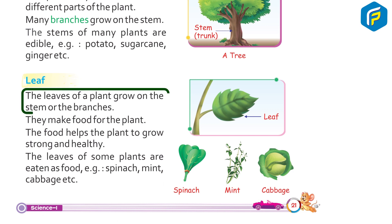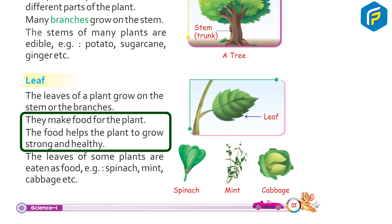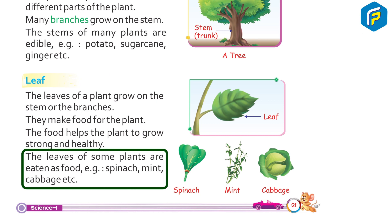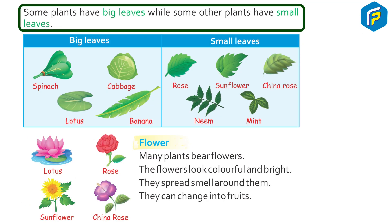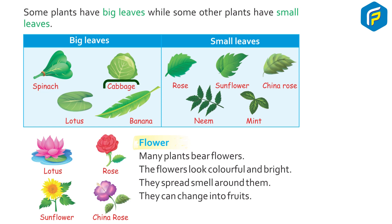Leaves. The leaves of a plant grow on the stem or the branches. They make food for the plants, helping the plant to grow strong and healthy. The leaves of some plants are eaten as food, e.g. spinach, mint, cabbage, etc. Some plants have big leaves, e.g. Spinach, Cabbage, Lotus, Banana.